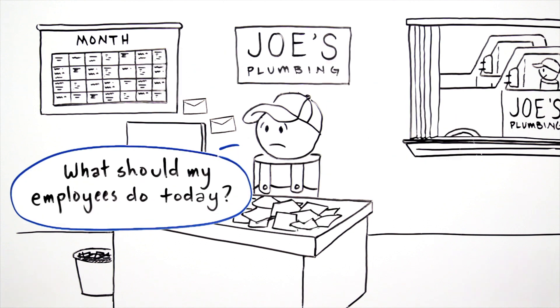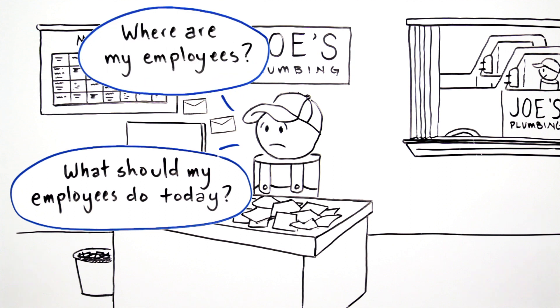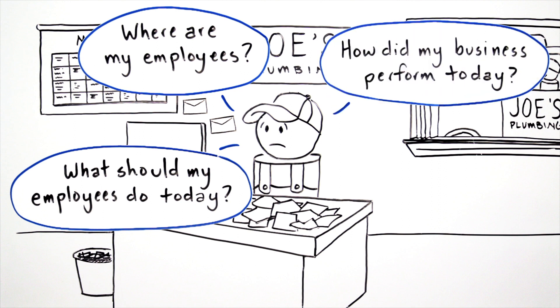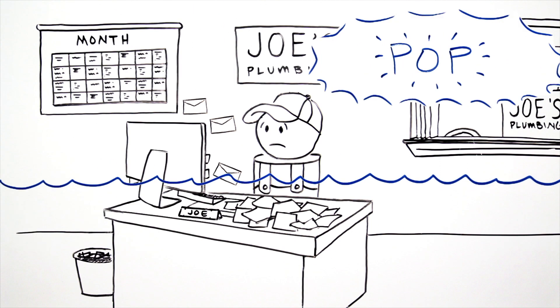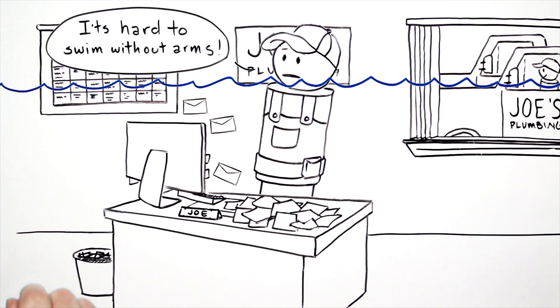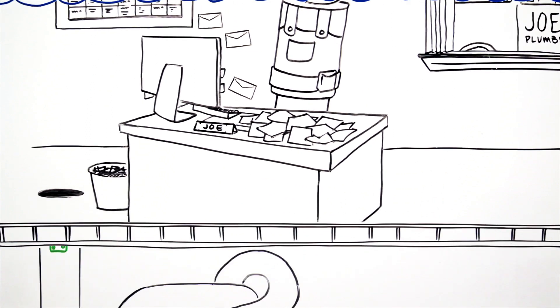Between figuring out the most cost-effective routes for his team, and then constantly adjusting operations for unplanned changes, knowing where to find his plumbers at any given moment, and assessing how they were doing and where they could improve, Joe often feels like he's in over his head. It's almost like he's flushing money down the drain.